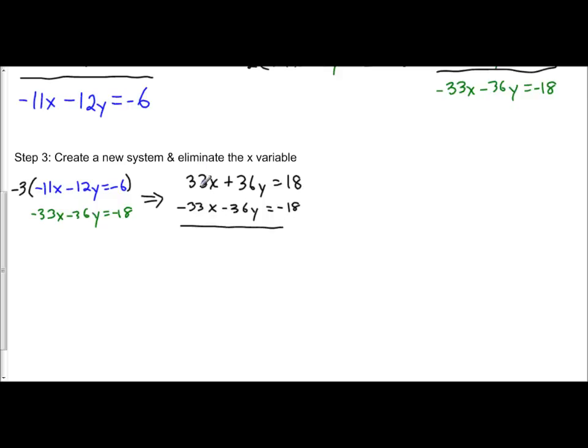33x and negative 33x is 0. Take a look. 36y and negative 36y is 0. So, everything cancelled here. I'm left with 0. And then 18 minus 18 cancels out. I'm left with 0. 0 equals 0. That is a true statement.